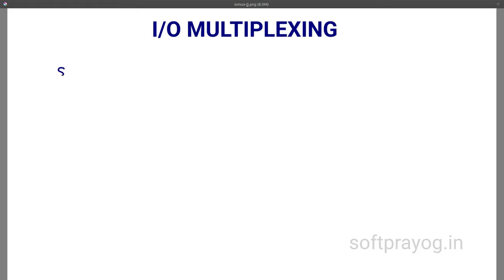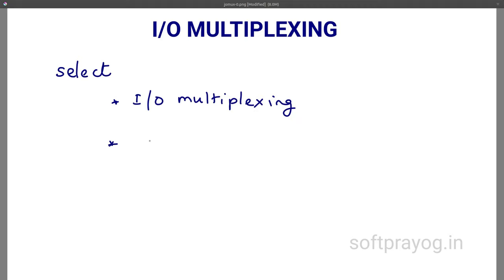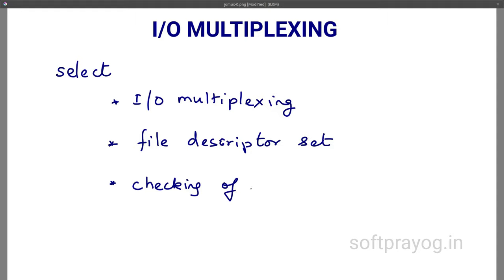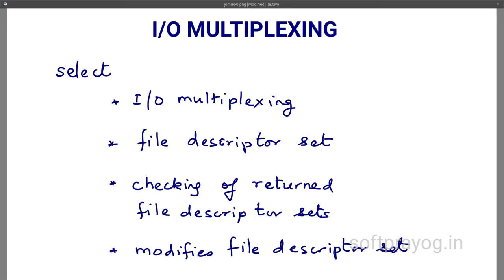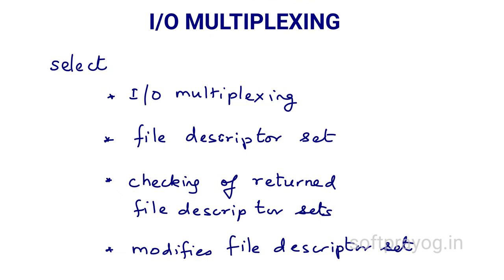To summarize the select server: the server is able to communicate with clients on multiple sockets. However, the file descriptor set is not a very efficient data structure. Suppose there are only two file descriptors returned by select — say file descriptor numbers 5 and 223. The server program starts by checking descriptor 0, then 1, 2, and so on until it finds 5, then continues checking 6, 7, 8, etc. until it finds 223. This is not very efficient or intuitive. Also, select modifies the file descriptor sets, so in the next iteration the program has to reinitialize them before making the select call again.